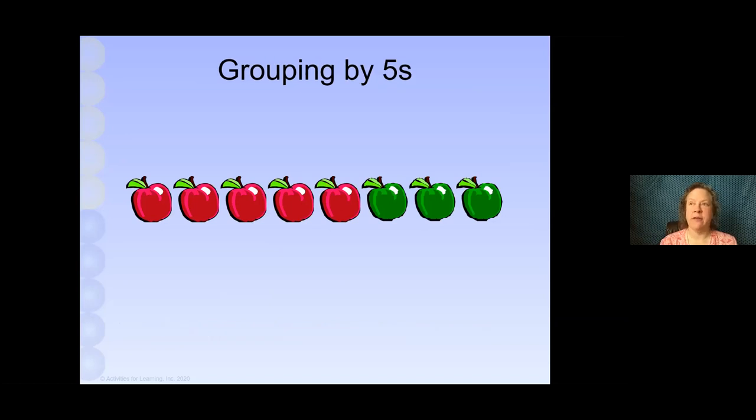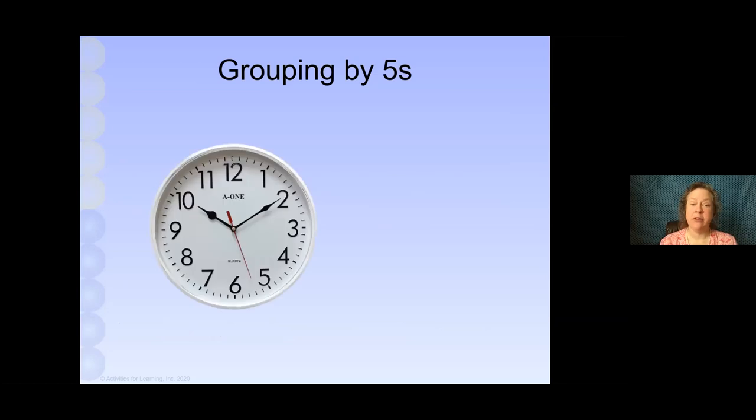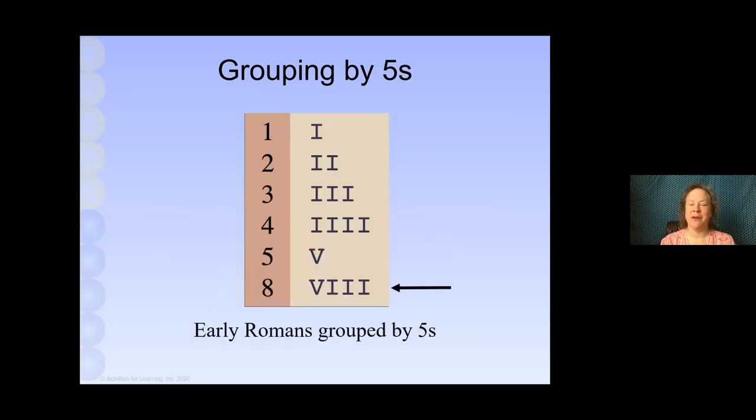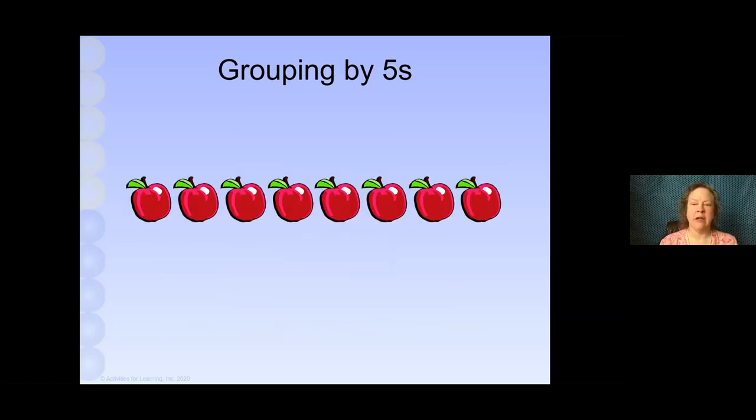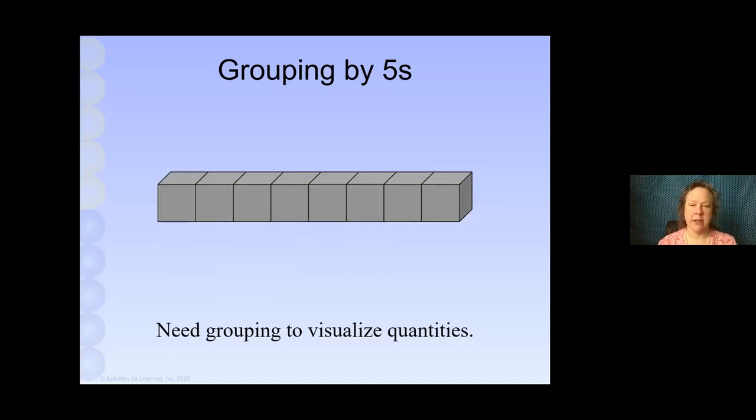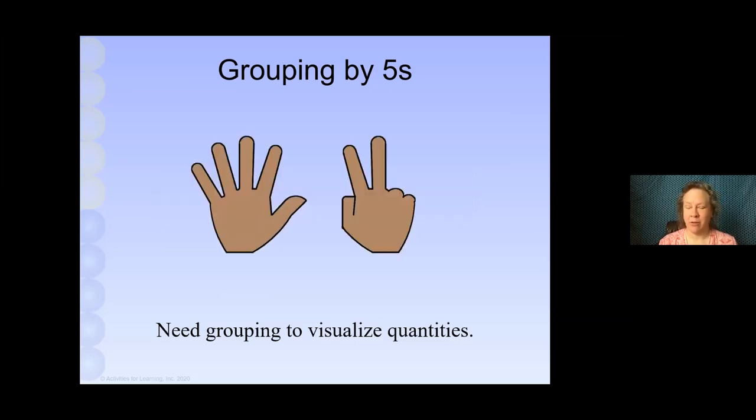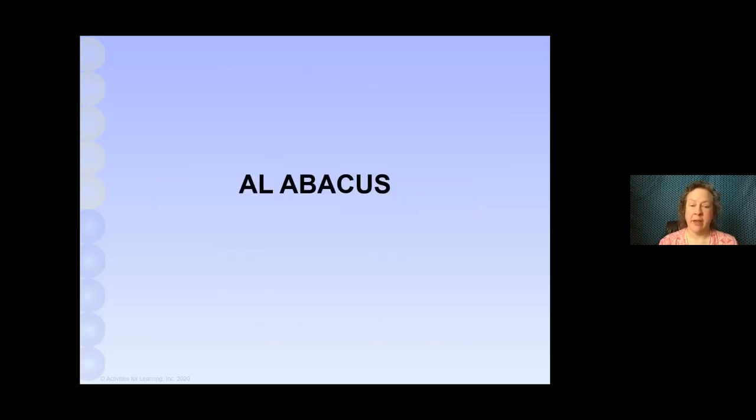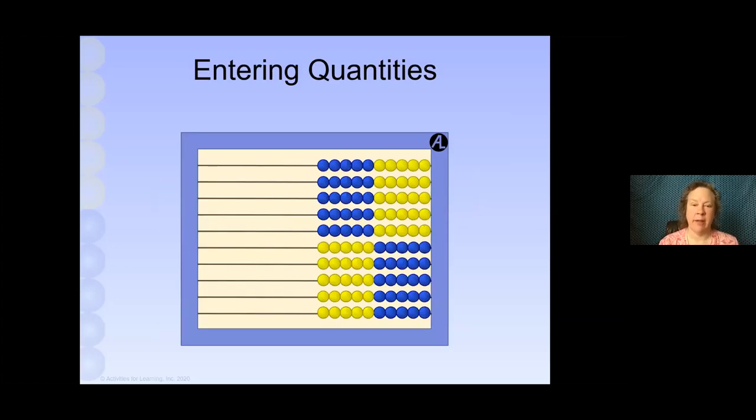Grouping by fives is really helpful, and we do it everywhere. When we're telling time, counting money, and even the early Romans grouped by fives. So this has been around for a long time. We need grouping in order to visualize quantities. Take a look at this rod. Can you tell how many divisions there are without counting? It's not grouped by fives, so it's really hard to see the quantity. Lucky for us, our hands are already grouped by fives, so that's a nice little tool. And because of that, the abacus is also grouped in fives.